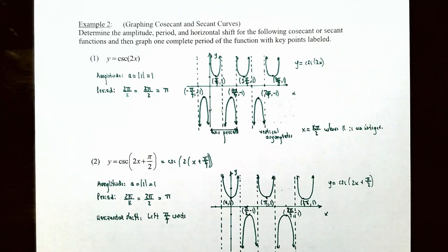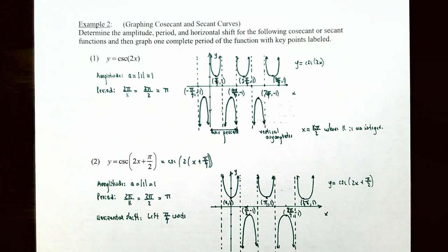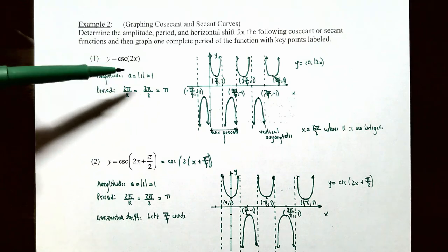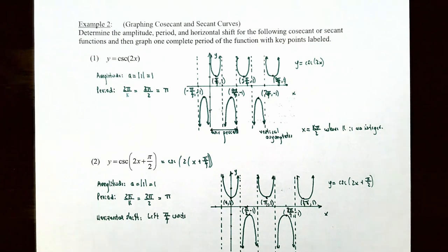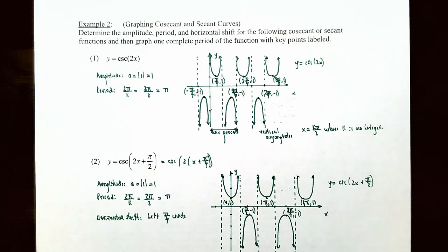Let's finish up with Example 2, graphing cosecant and secant curves. Number one: y equals cosecant of 2x. Since we're multiplying the cosecant function by 1, the amplitude is the absolute value of 1, which equals 1. The period is affected because it's cosecant of 2x, so k equals 2, and the period is 2π divided by k, or 2π divided by 2, which equals π. This is a horizontal compression by a factor of one-half.